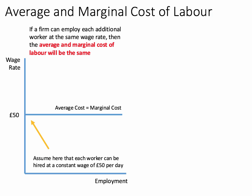Now here are two diagrams to reinforce the point. If a firm can employ an additional worker at the same wage rate — for example, you can hire any number of workers at a constant wage of £50 per day — then the average cost of labour will be the same as the marginal cost of labour.